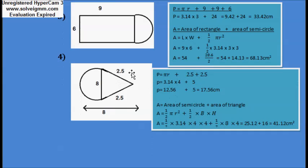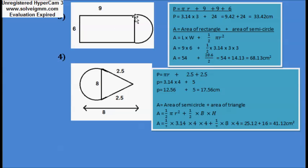Question number 3: again you have to find the perimeter and area of this figure. For the perimeter — the boundary length — starting from the semicircle, the curved portion of the semicircle is pi·r. Then add pi·r, then plus 9 (the length of the rectangle), then 9 again, and 6. Your formula becomes: P equals pi·r plus 9 plus 9 plus 6.